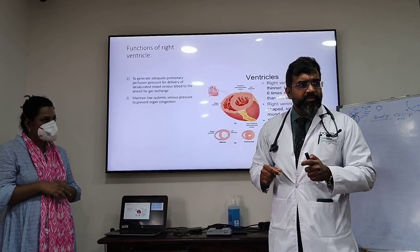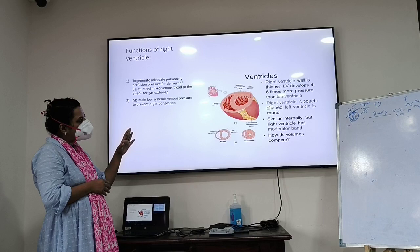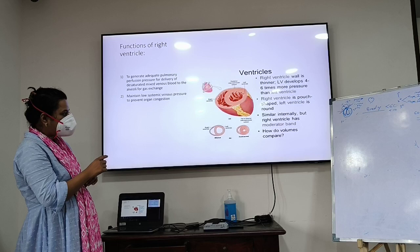What was the lactate of that patient? Around 10.9. So you must understand clinically how this works. The right ventricle wall is thinner and the LV generates around 4–6 times more pressure than the right ventricle. The right ventricle is house-shaped and the left ventricle is round.